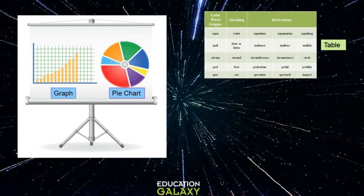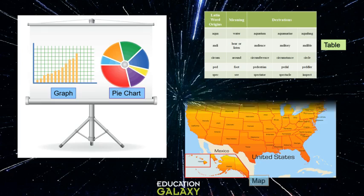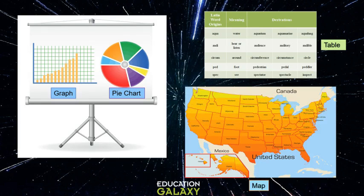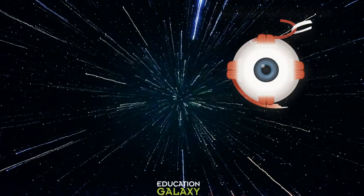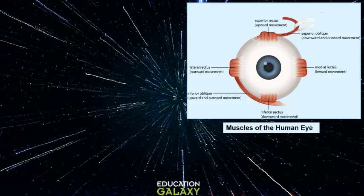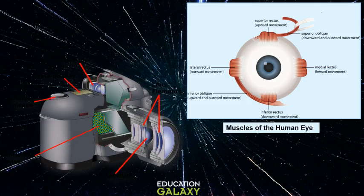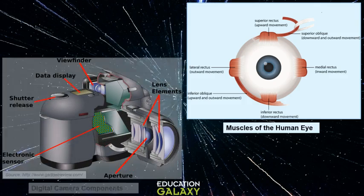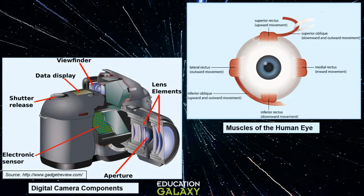Similarly, a table organizes and displays information in a visual way so it is easier to read and understand. A map is also a graphic. A map shows where places are located. And this is a diagram. A diagram explains information or how something works in a visual way. As you can see, the diagram has labels that name different parts of the graphic and a caption which explains what the graphic is about.